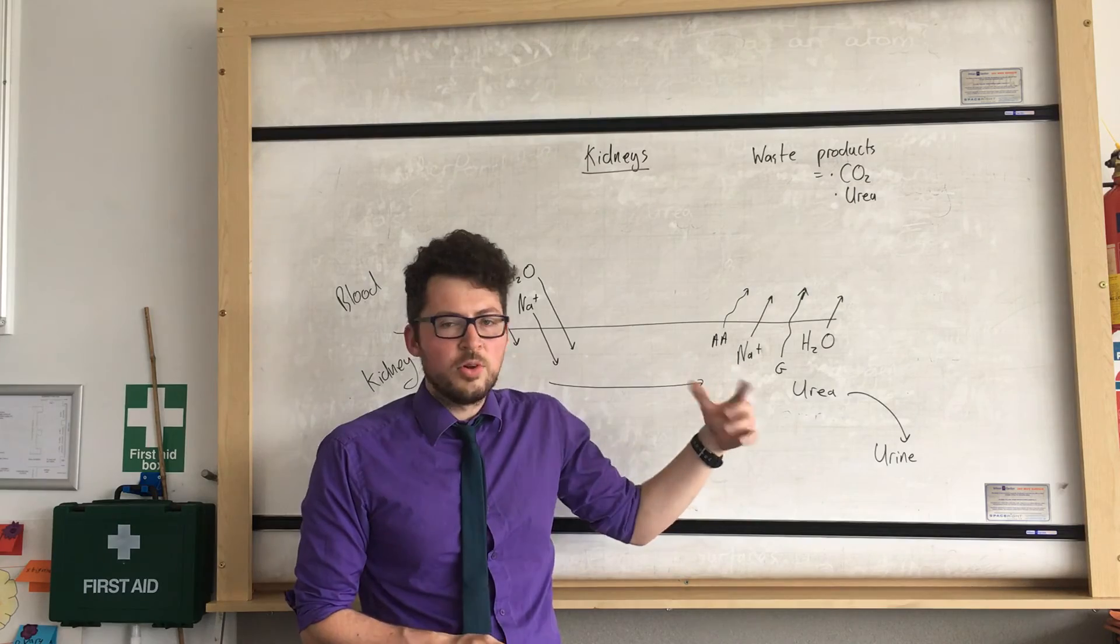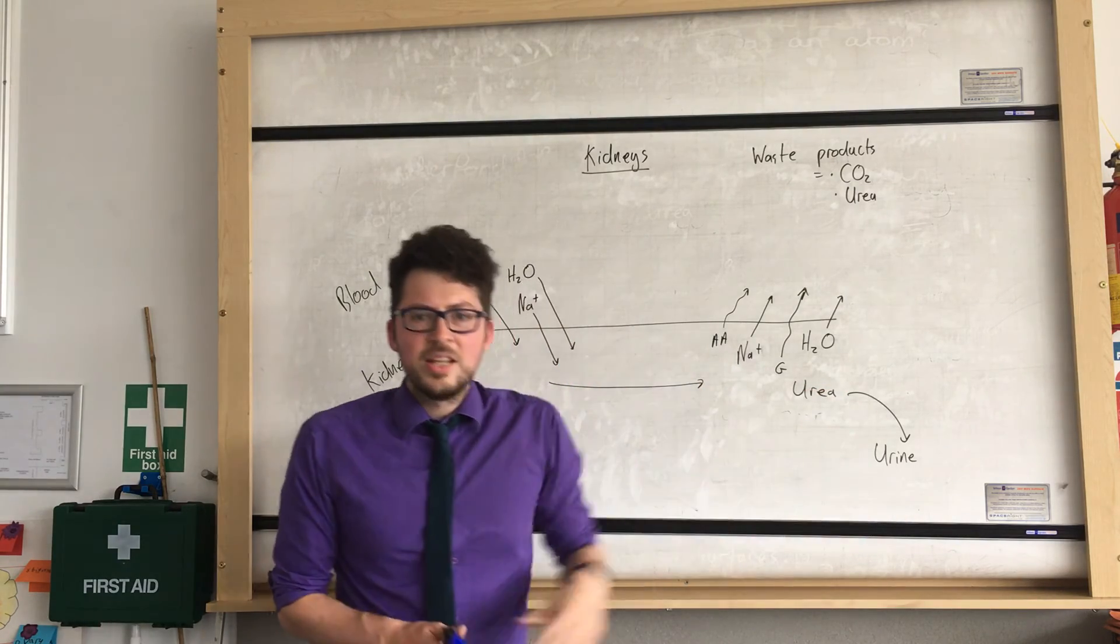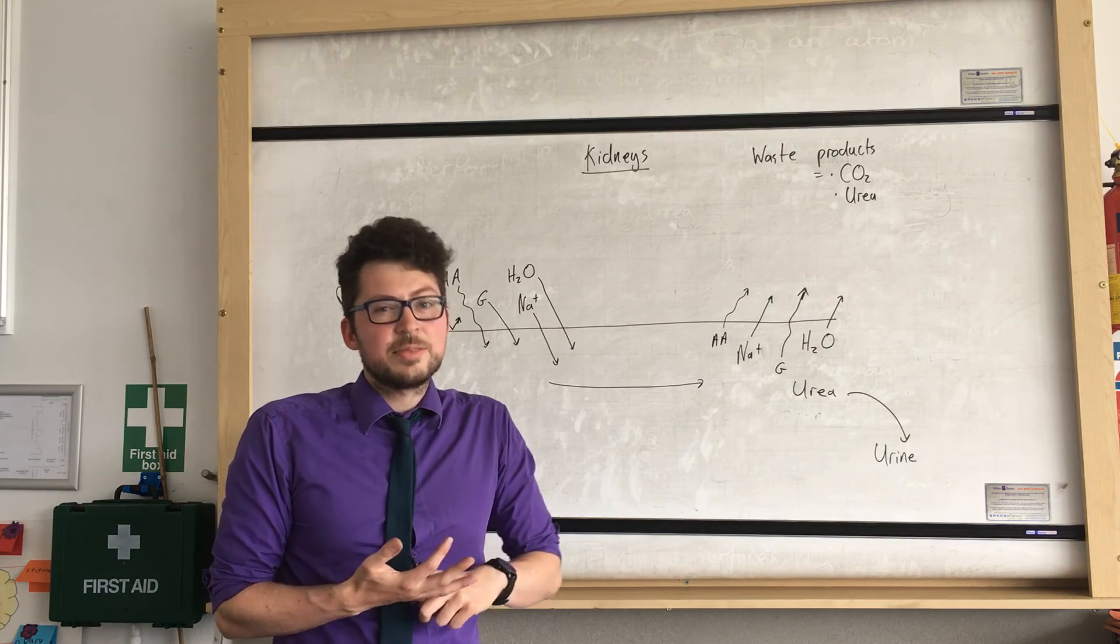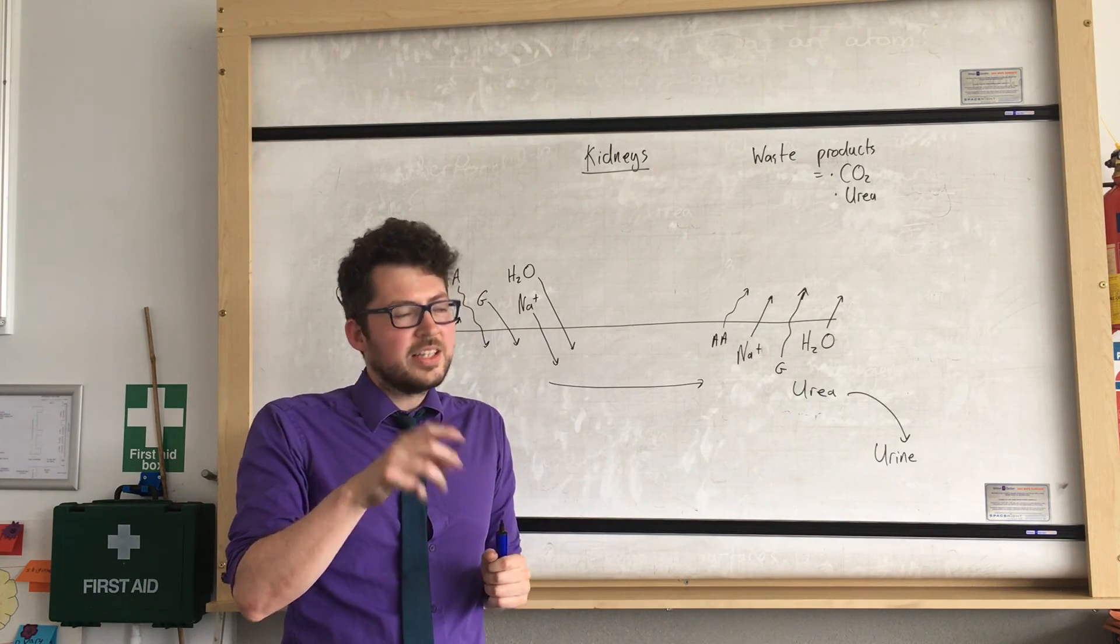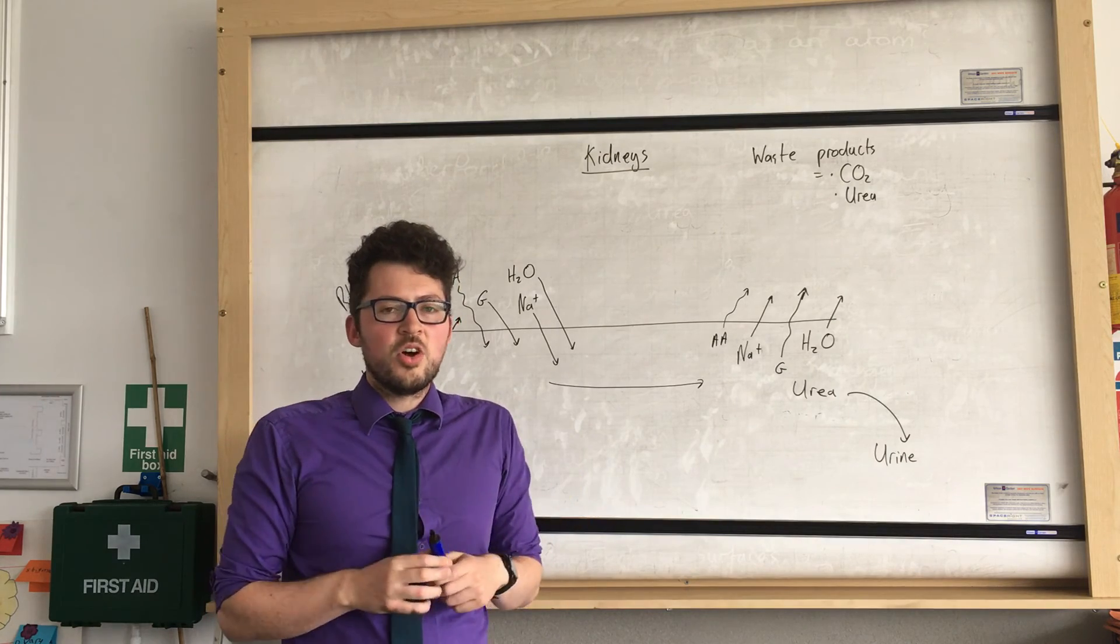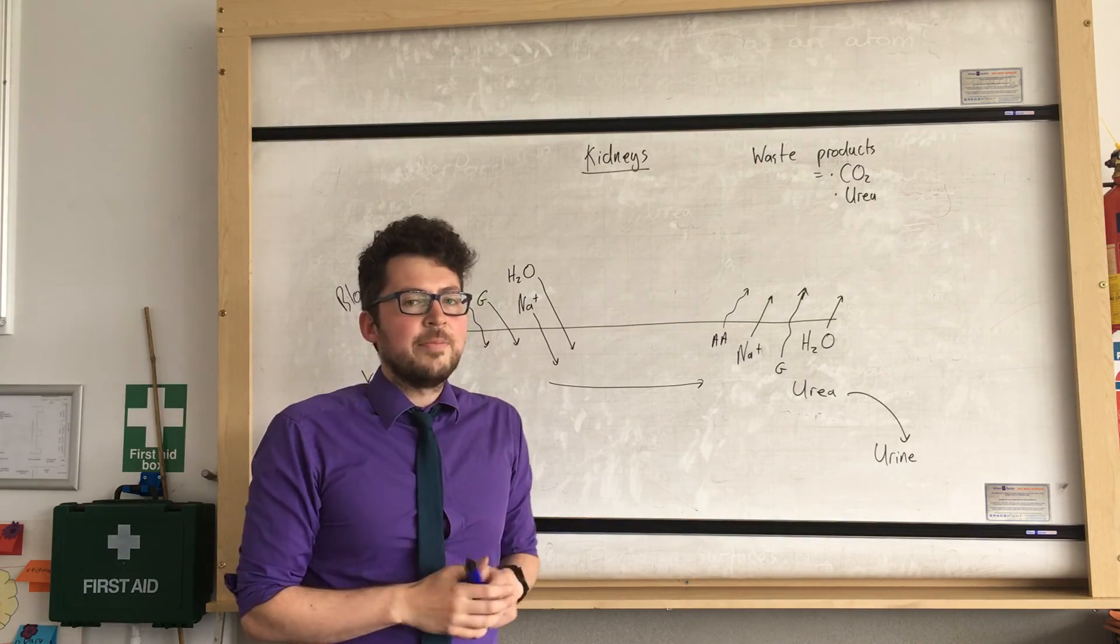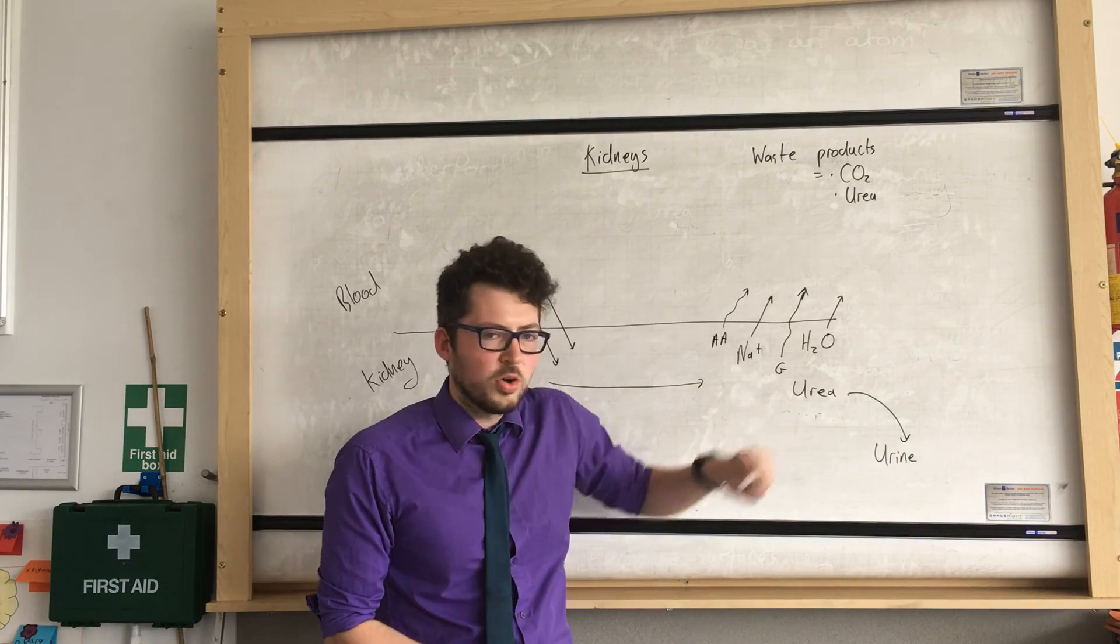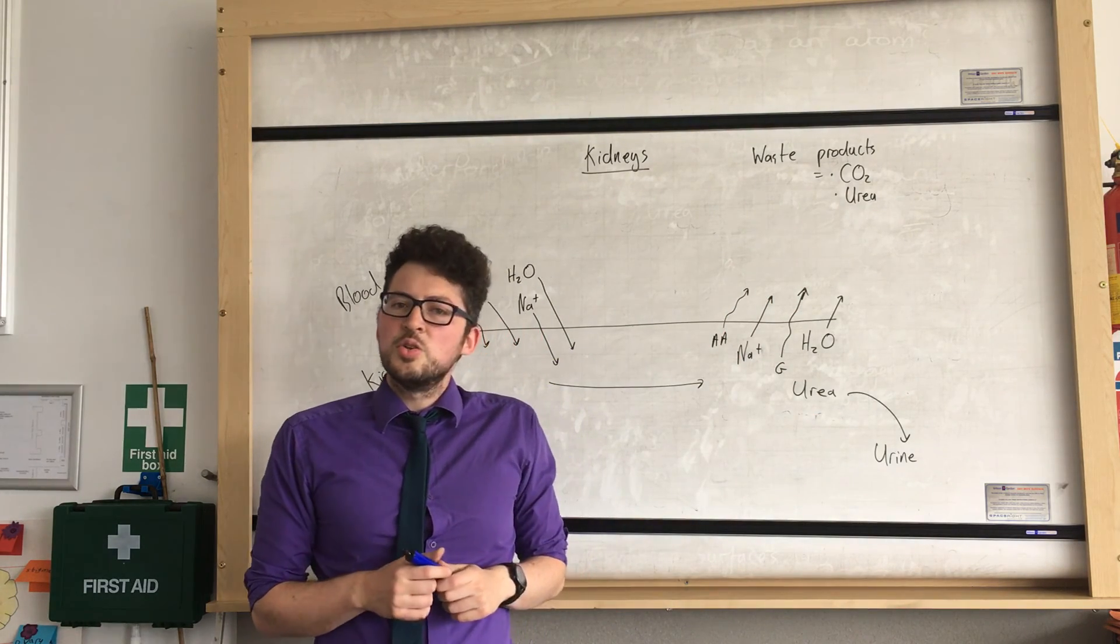That's because we don't want to lose that water in urine. So they might give you some data on that and ask you to interpret and explain why is our urine more concentrated and more yellow on a hot day than a cold day. The reason is because more water is reabsorbed into the blood and less water is lost as urine.